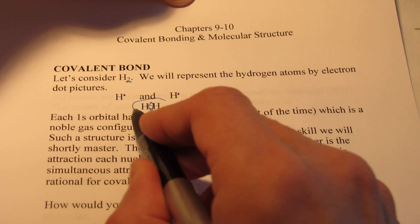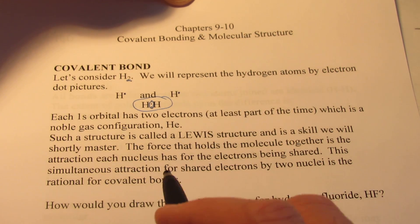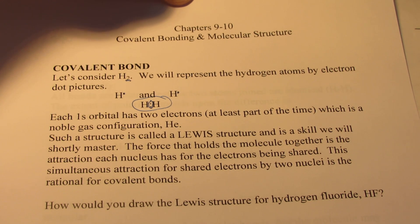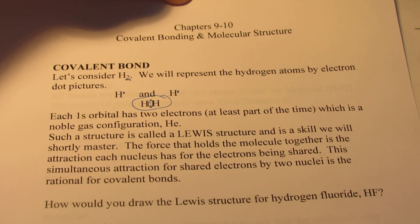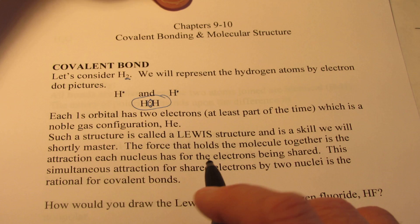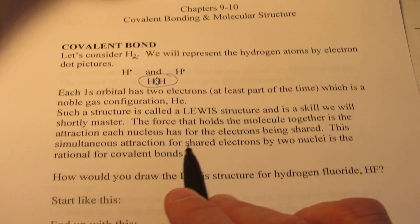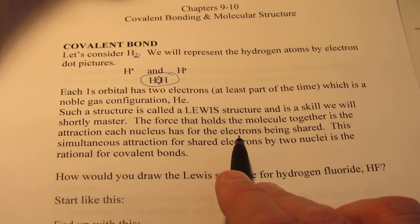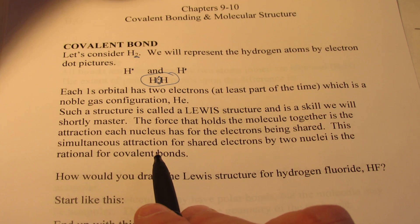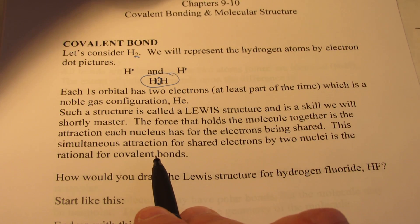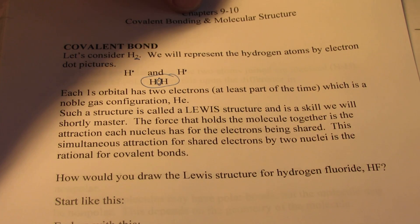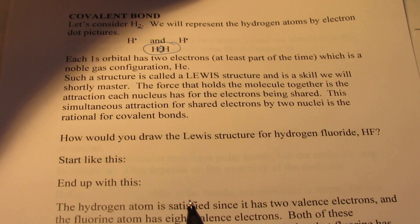The structure I just drew is called the Lewis structure, and is a skill we will shortly master. The force that holds the molecule together is the attraction that each nucleus has for the shared electrons. This simultaneous attraction for electrons between two nuclei is the rationale behind covalent bonding.